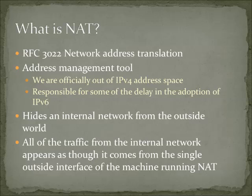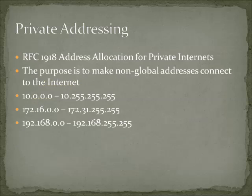The NAT machine is usually a router. Last time we talked a little bit about private addressing. Just as a reminder, these are the RFC 1918 address allocations for use with private networks, and private networks are used with NAT. So we've got the 10, the 172, and the 192 addresses.